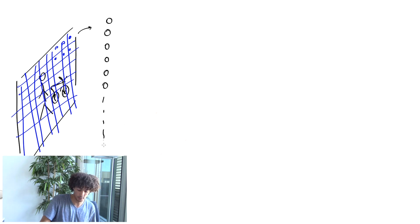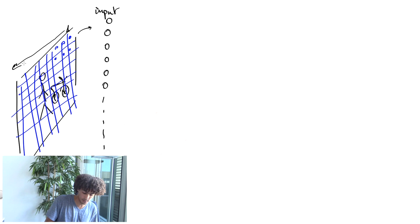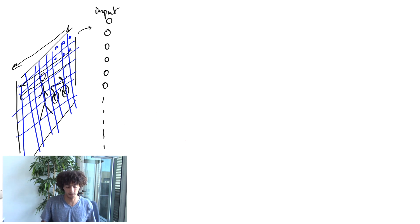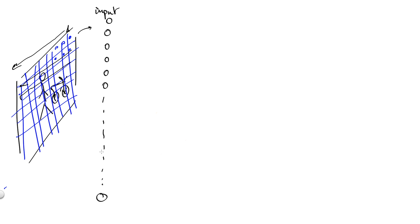This would be our input. We can say that this is the first value, second, et cetera, and then you start over. So you are listing all the grid values in this fashion.